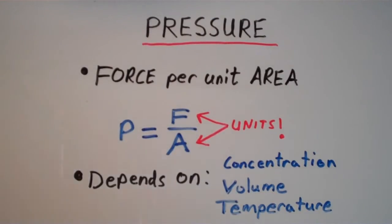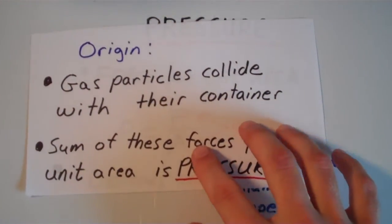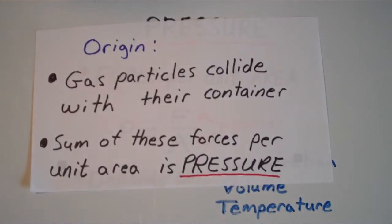So where does the pressure of a gas come from? The pressure of a gas comes from collisions of gas particles with the surface of their container. And the sum of all of these collision forces per unit of area is the pressure. So you have thousands or millions or trillions of these gas particles. And many of them are colliding with each other and many of them are colliding with the surfaces of the container. The ones that are colliding with the surfaces of the container contribute to the pressure of the gas.